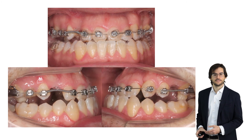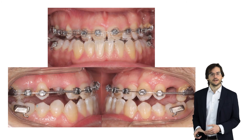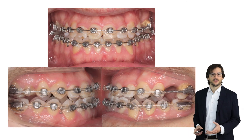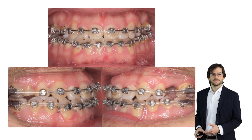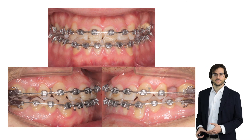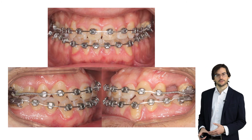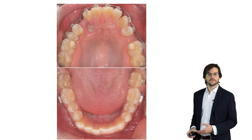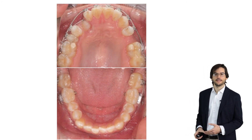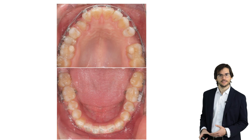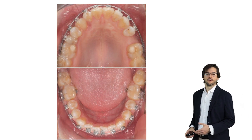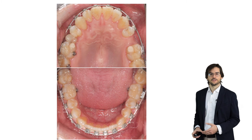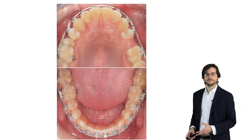Checking these videos, we can observe how we corrected the position of the canine with direct traction to the arch, and how we opened the bite to correct the anterior crossbite with distal traction using skeletal anchorage. Occlusal videos show how we corrected the canine position using very soft forces, opened space for the second premolar, and distalized the lower teeth using elastic chains directly to the miniscrews.